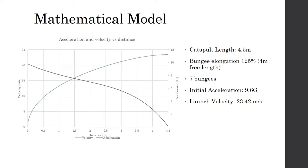With the catapult length of 4.5 meters, a bungee elongation of 125% using a 4 meter free length and 7 bungees, the initial acceleration of the UAV is 9.6 G's and the launch velocity is 23.42 meters per second.